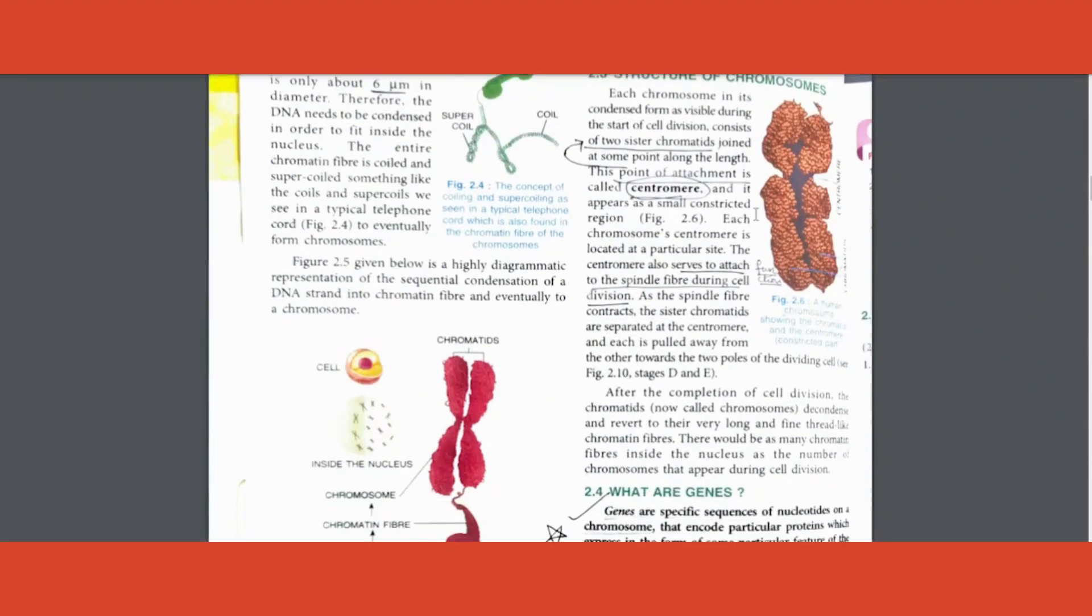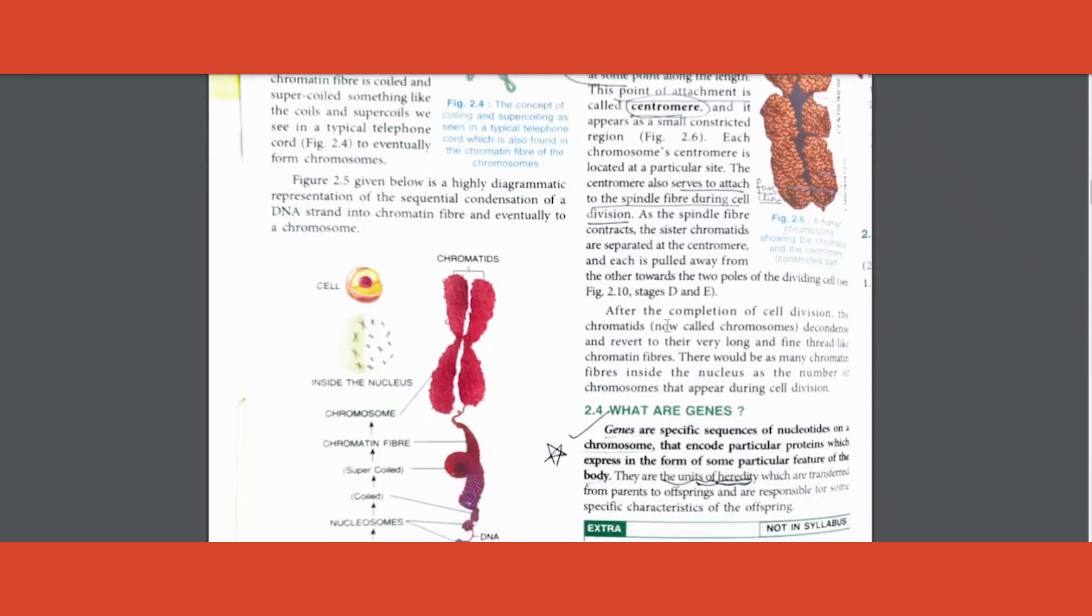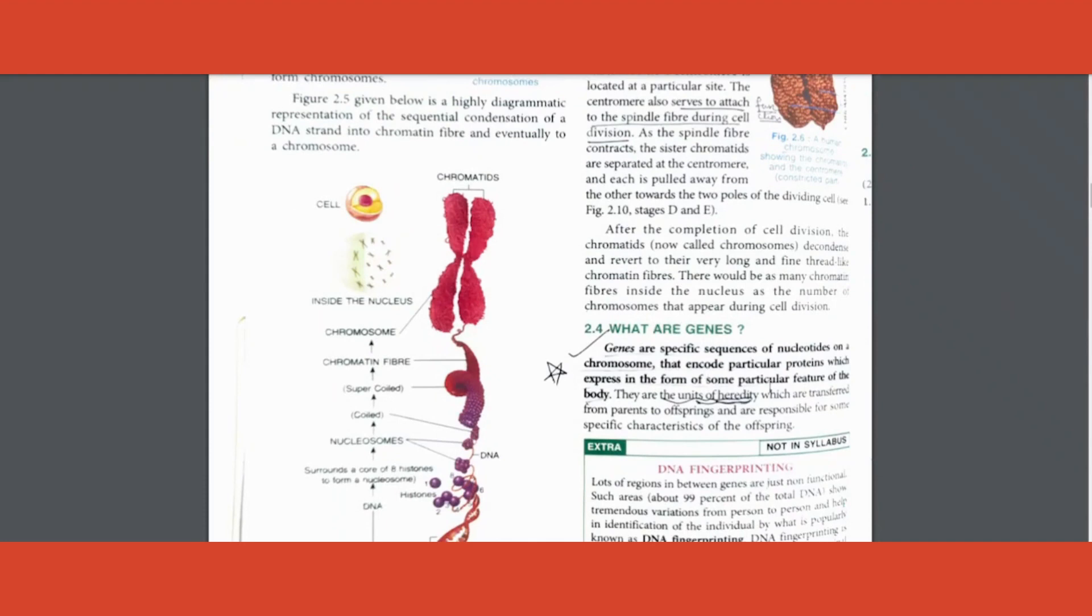Next question is what are centromeres? Some of you end up writing the center of the chromosome - it is incorrect. Centromere is the point of attachment of two sister chromatids. Function of it - first of all it acts as a point of attachment, other than that it serves to attach spindle fibers during cell division. Definition of gene - again multiple times they have asked.